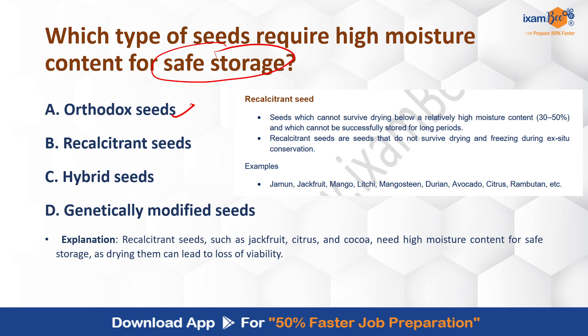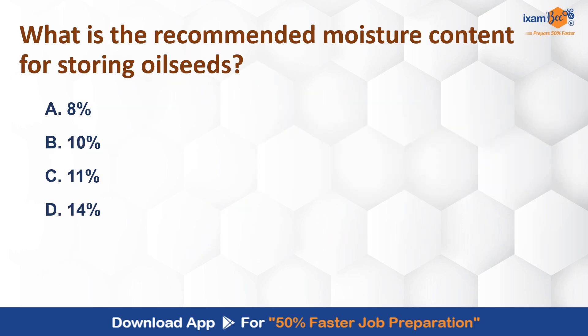Recalcitrant seeds are those which cannot survive low drying — they must be stored at relatively high moisture content. Orthodox seeds, on the other hand, can be dried to low moisture content for long-term storage. The recommended moisture content for storing oil seeds is different from cereals, and you should remember these values.